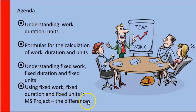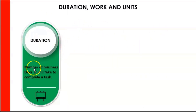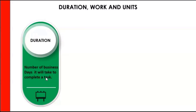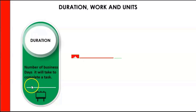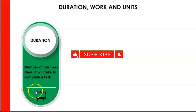So let us look a little closer at these three concepts. The first is duration. What is duration? It's the number of business days it will take to complete a task. So if duration is two days and you start on Monday, it will finish on Tuesday. But if you start on Friday, it will finish on the following Monday, because it is really dealing with business days — the working needs.